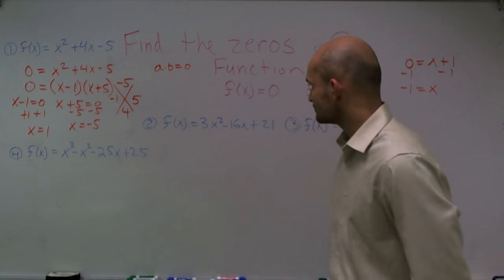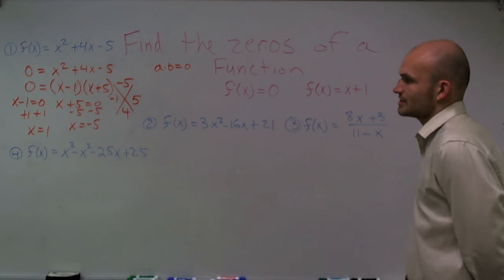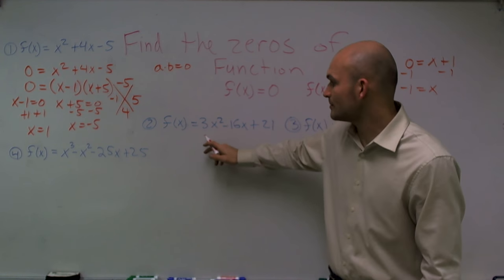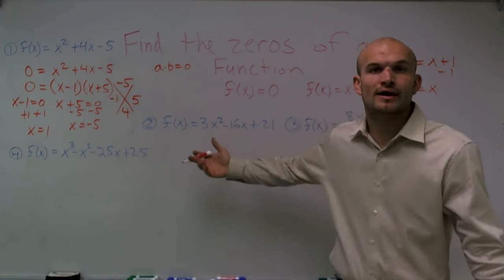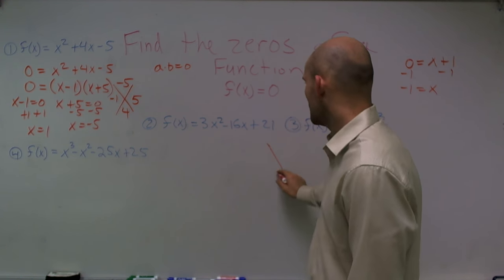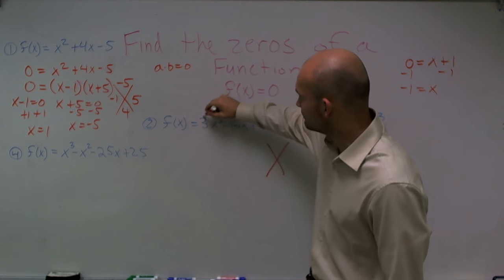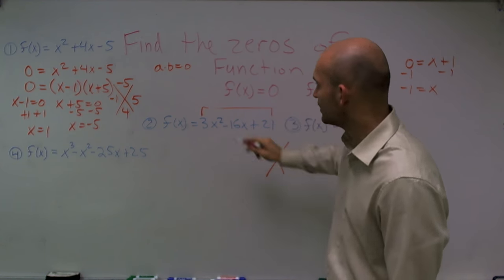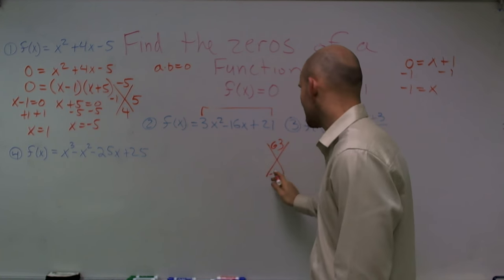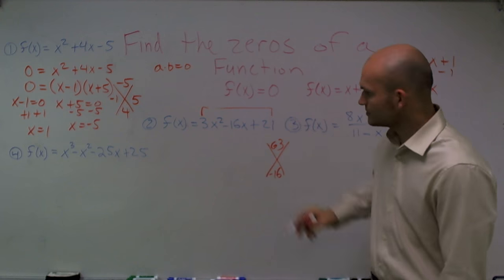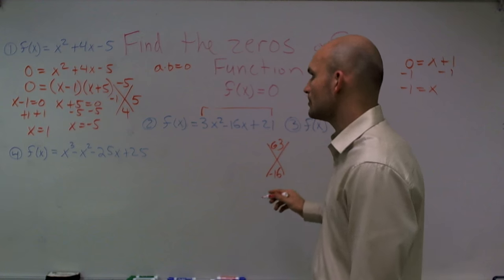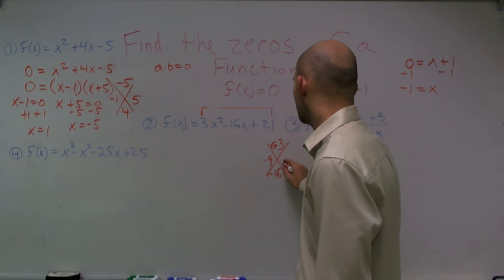Let's move on to number 2. This problem is a little more difficult because now the coefficient a in front of x squared is not 1. I can still use the diamond method, but now I need to multiply 3 times 21. So 3 times 21 gives me 63, and then I have negative 16. What two numbers multiply to give me 63 but add to give me negative 16? Our two numbers are going to be negative 9 and negative 7.